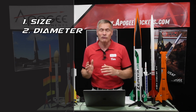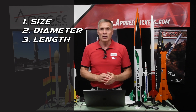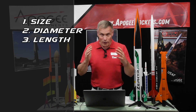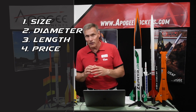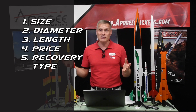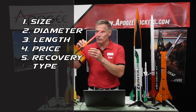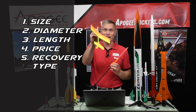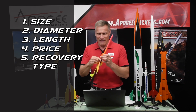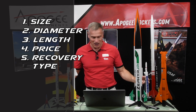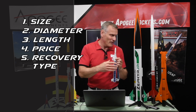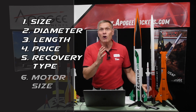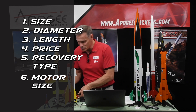So you get size, then you have the diameter of the rocket — some are skinny, some are fat — you have the length, and you have the price, how much money people are willing to afford. Then you have what the recovery system might be in a rocket, like this one right here is a glider. And then over here we have a helicopter rocket, that's a different classification. And then we have motor size — not only the size of the rocket, but the motor size.